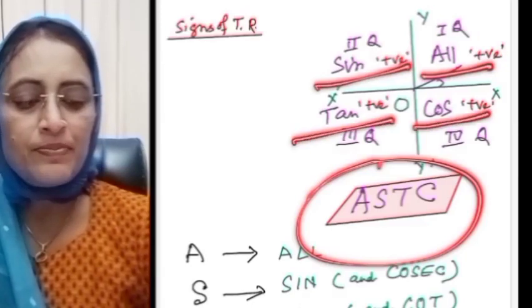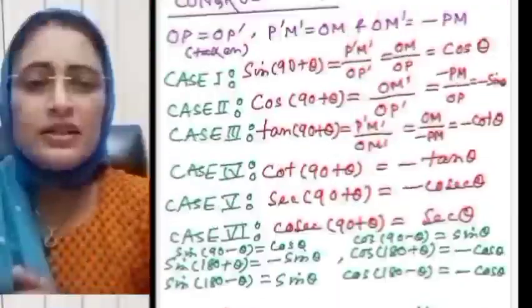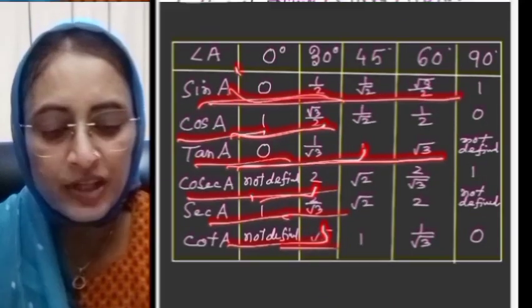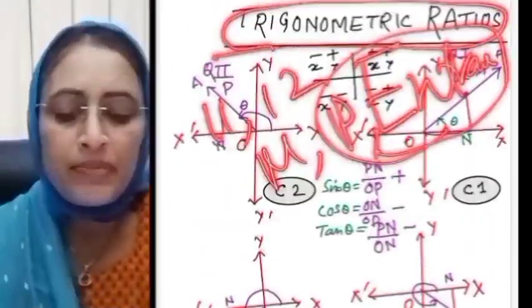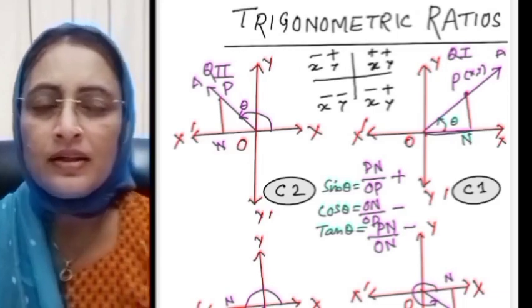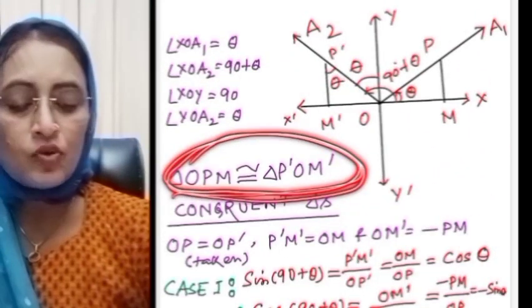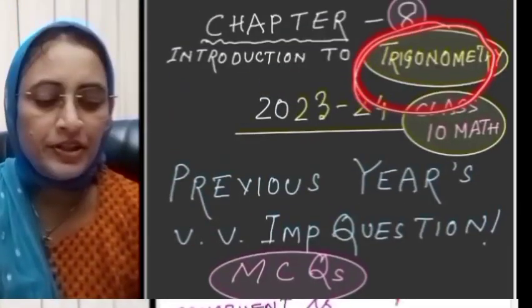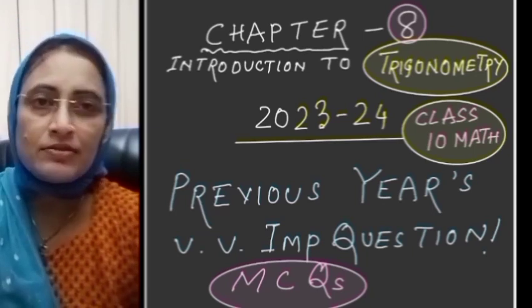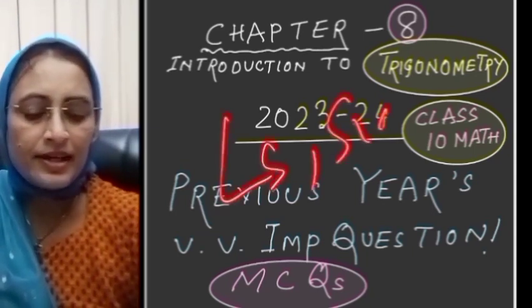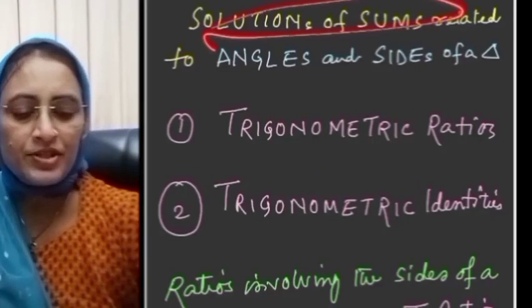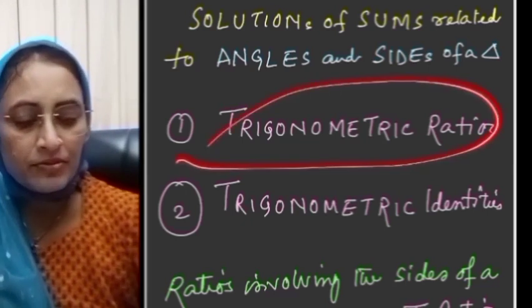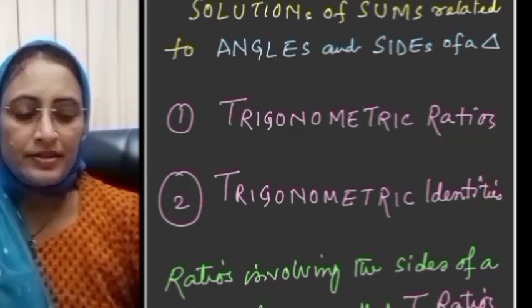These are very important for your entrance exam. Trigonometry is that branch of mathematics which deals with the measurement of angles and sides of a triangle, and the solution of sums related to angles and sides of a triangle. Two things we must know in trigonometry: number one is trigonometric ratios, and number two is trigonometric identities.